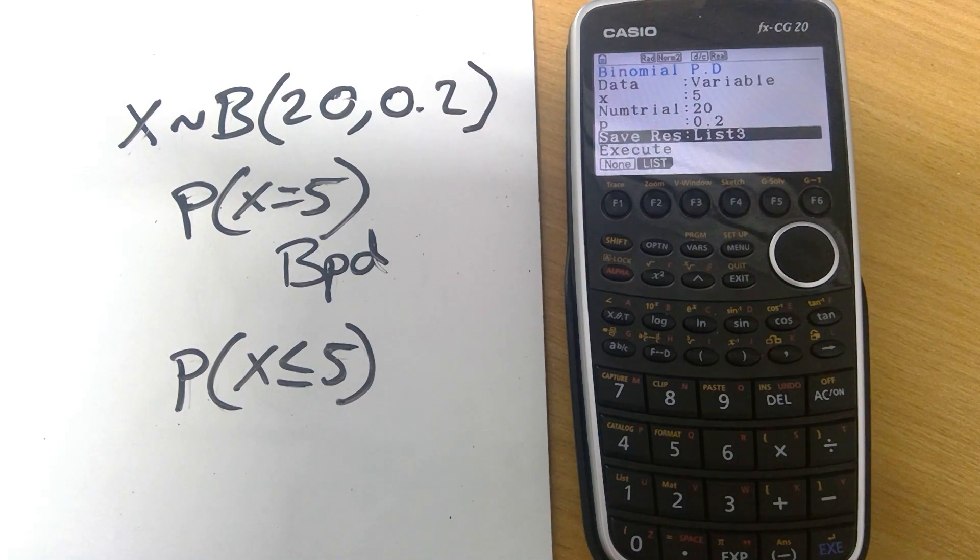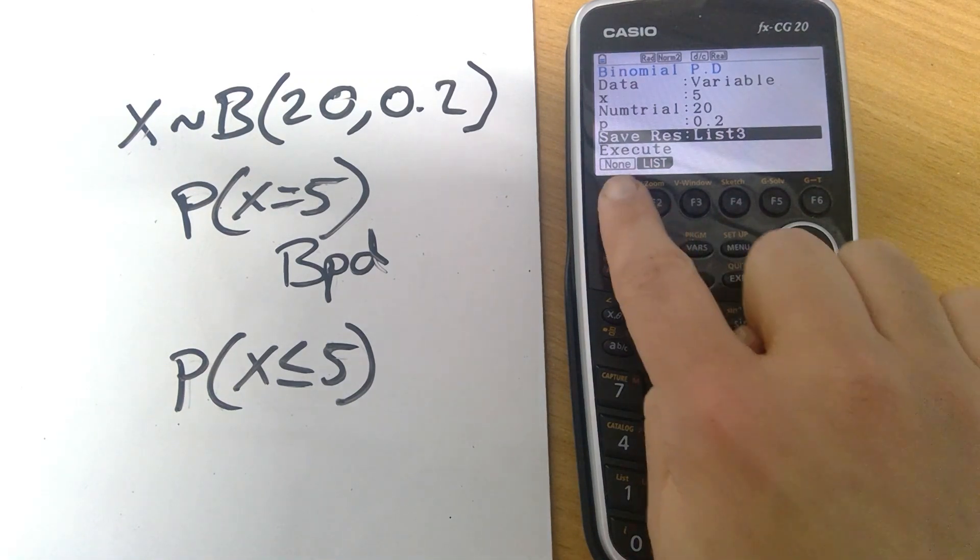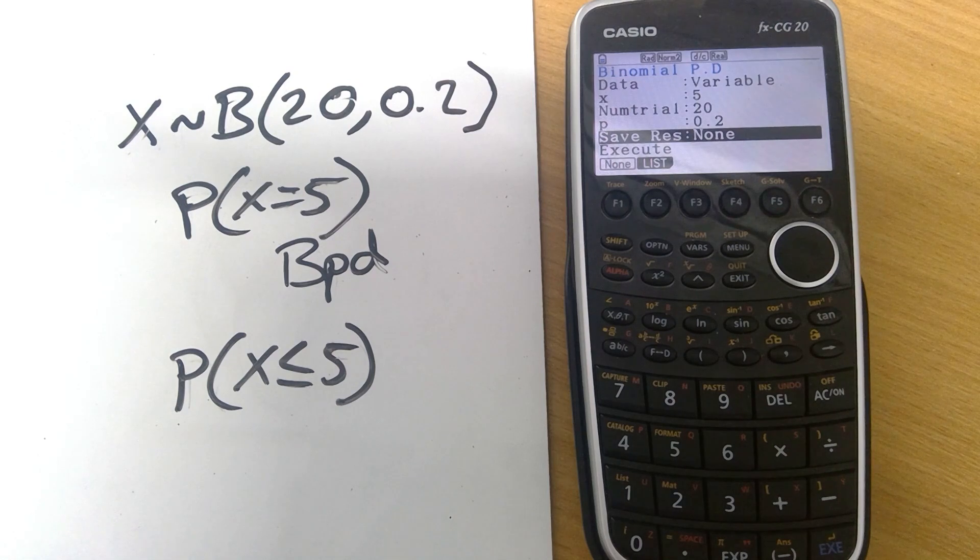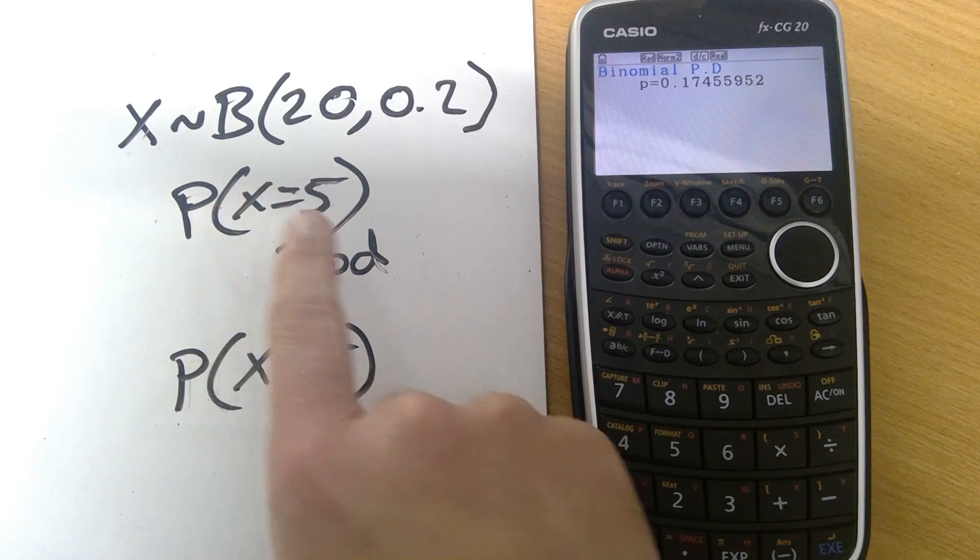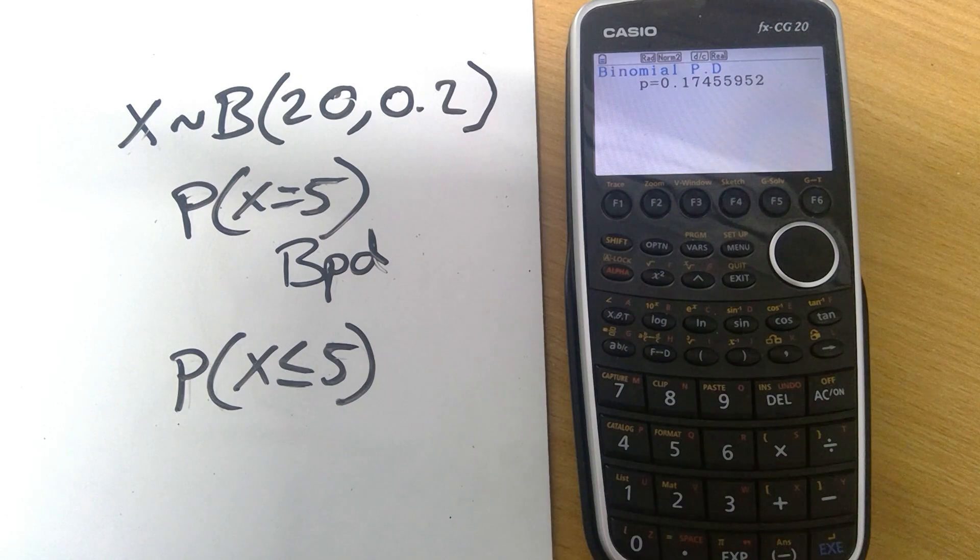Here is where it can save the results. I don't need it to save the result anywhere so I'm simply going to put it as being none, but you could change it and get it to save in a particular list. Pressing execute will do the calculation and that's that value for this first question. Probability X equals 5, 0.1745 etc. Nice and simple.